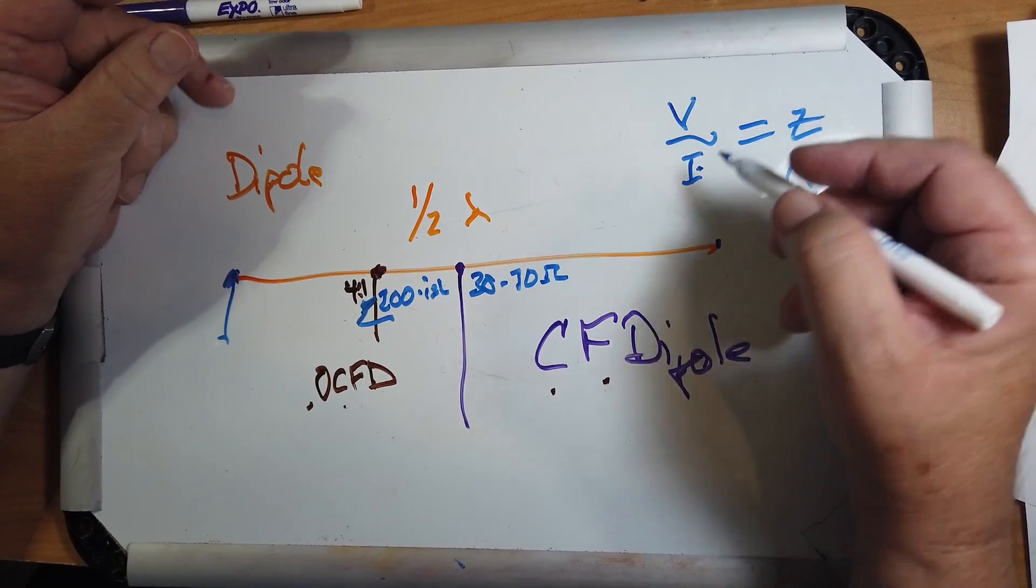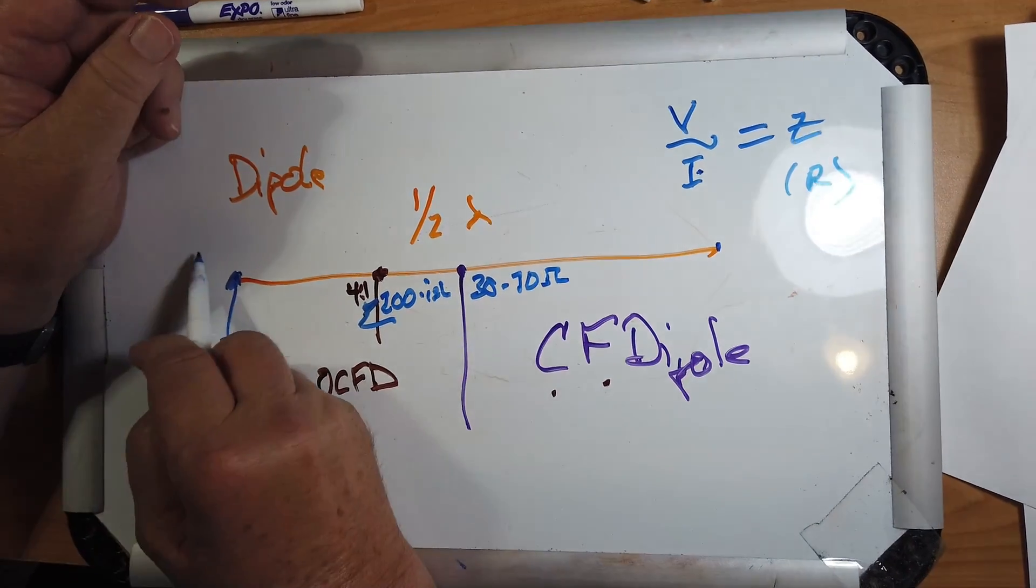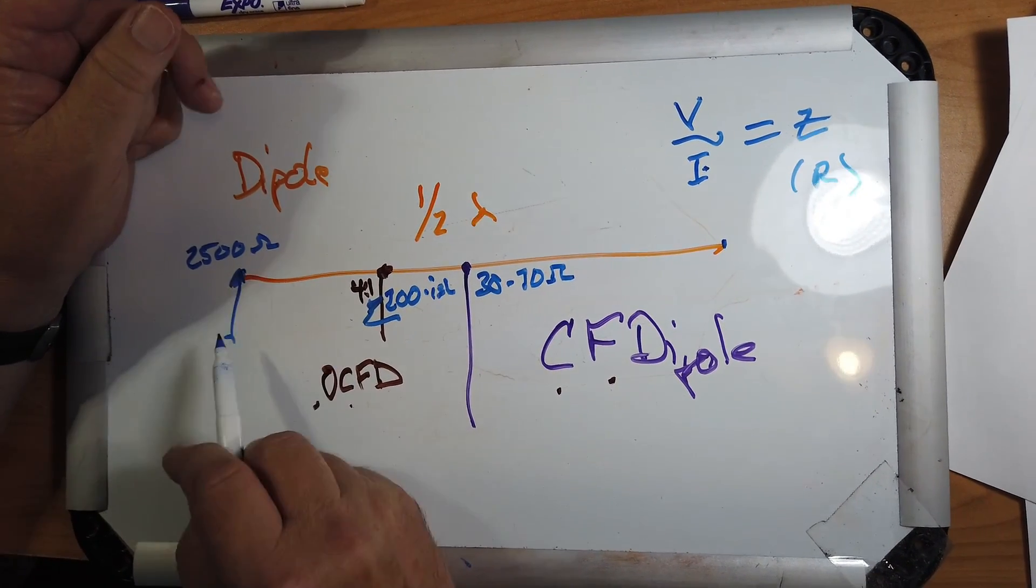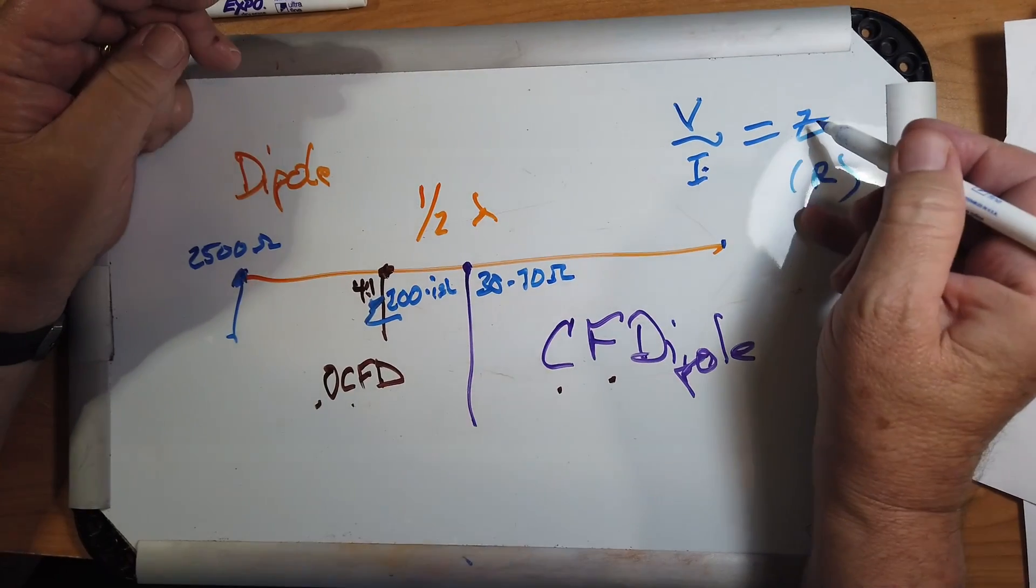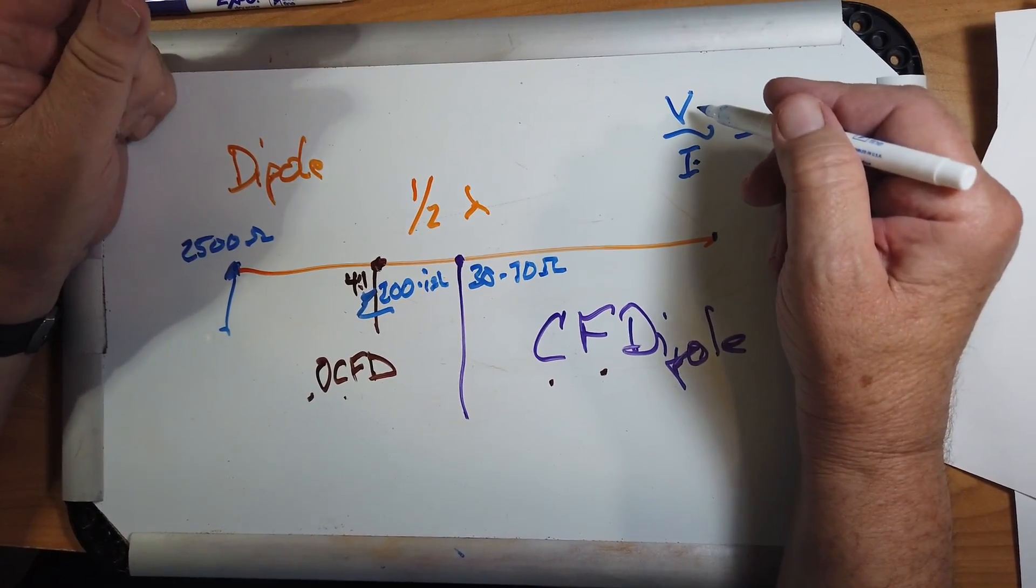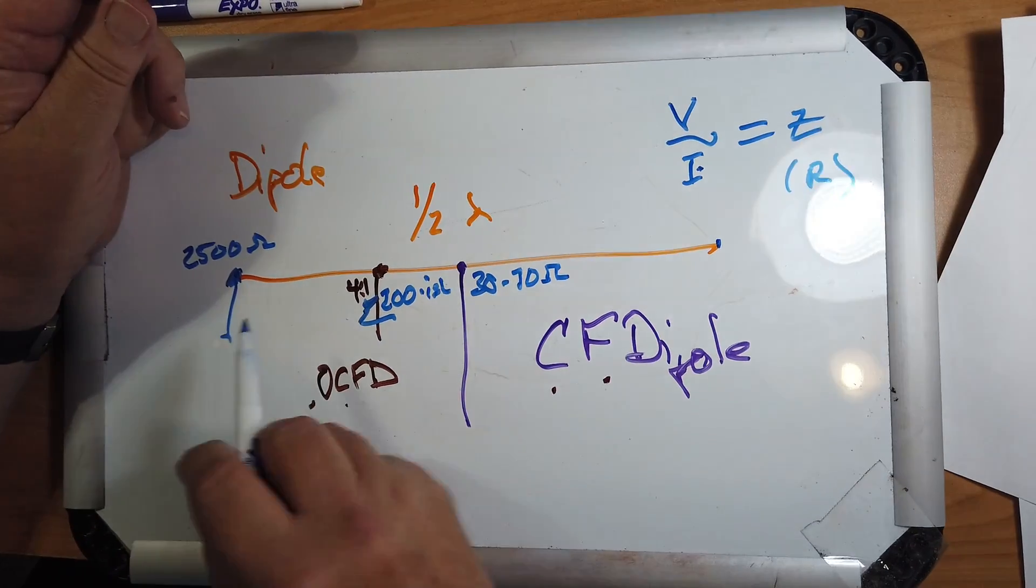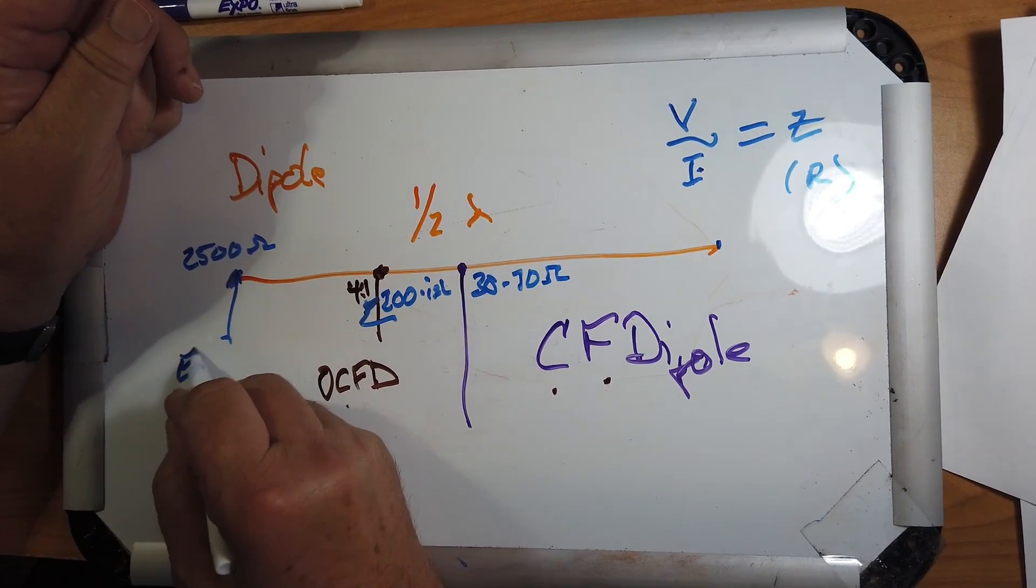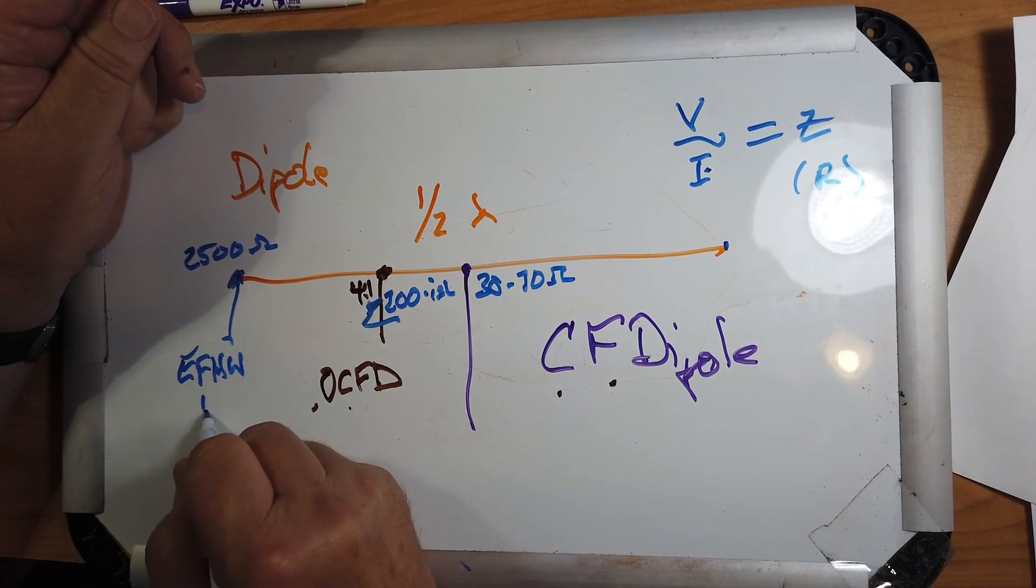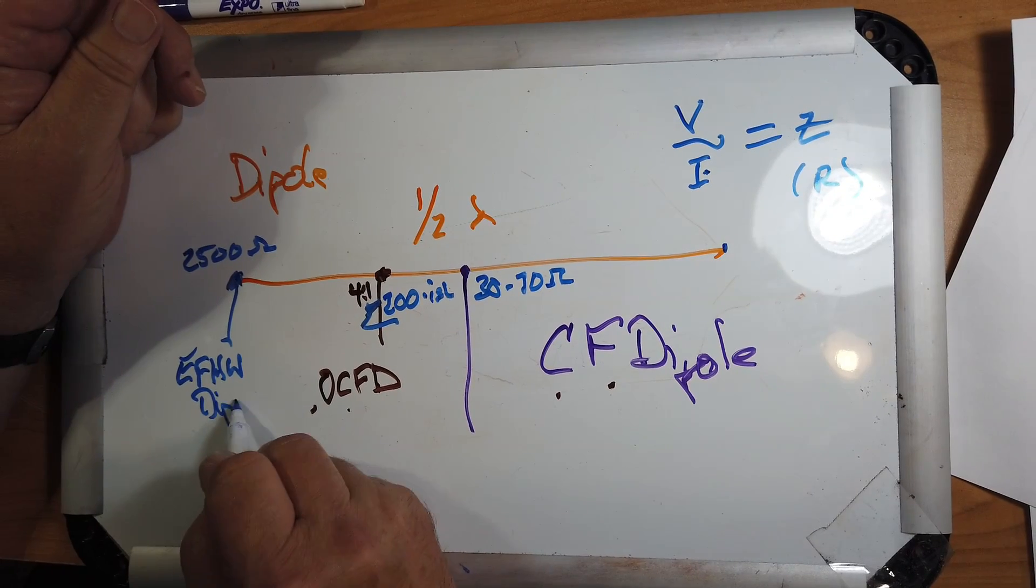Now, in actual practice, that's not true. It's more like 2,500 ohms at the end, which means if it's 2,500 ohms, the current is small, the voltage will be very high. Voltage is high at the end on dipoles, and we call this an end-fed half-wave dipole.